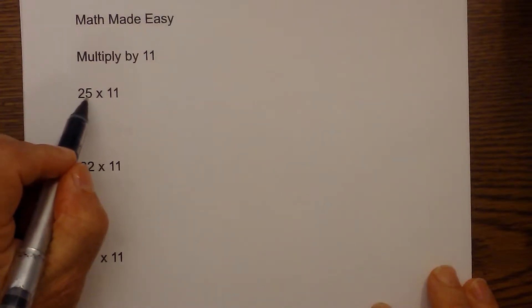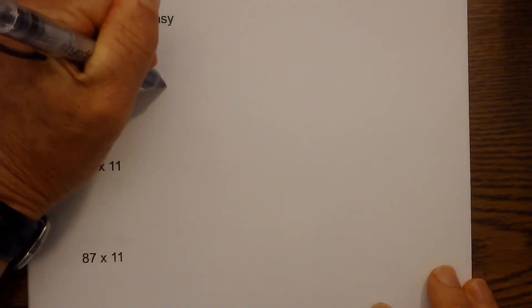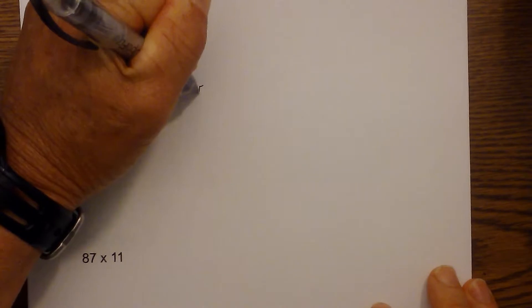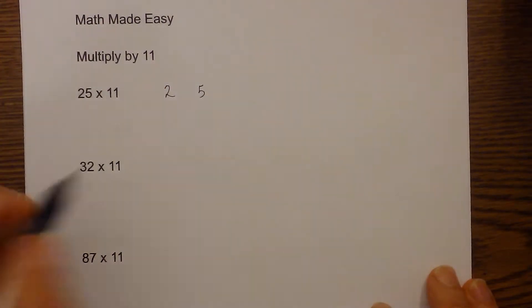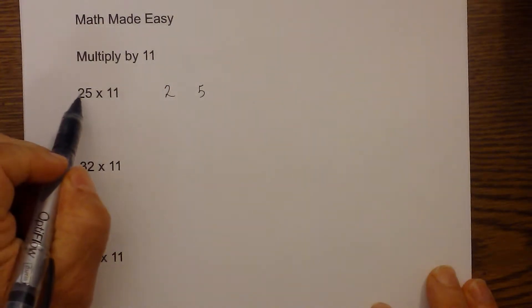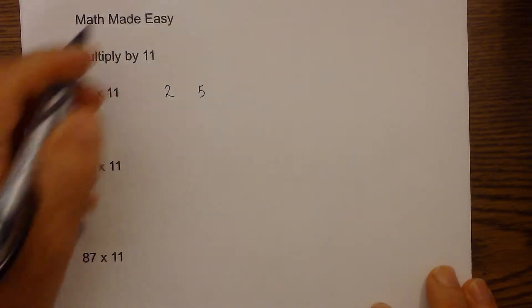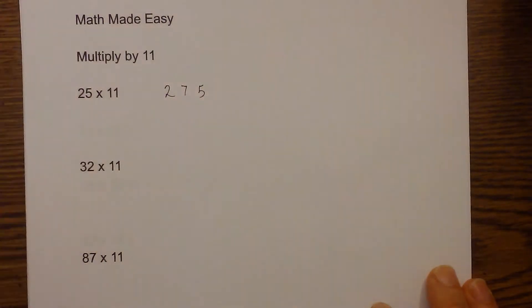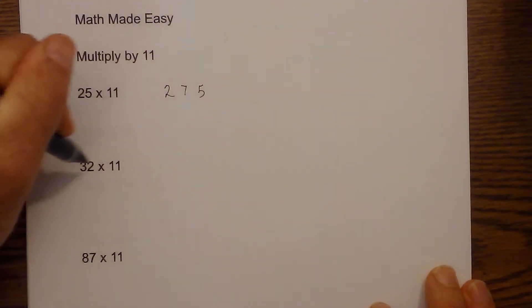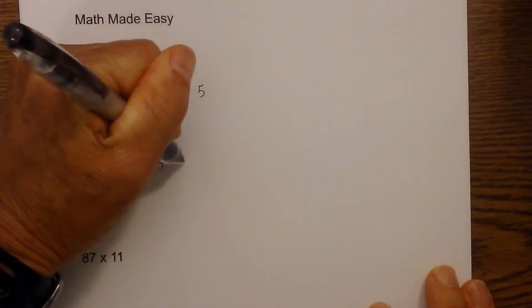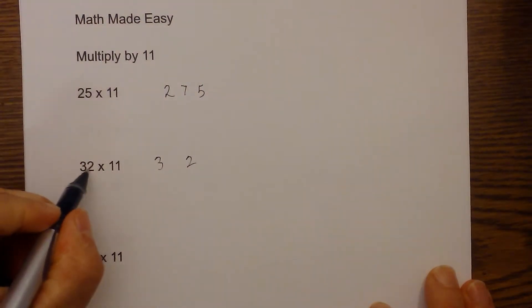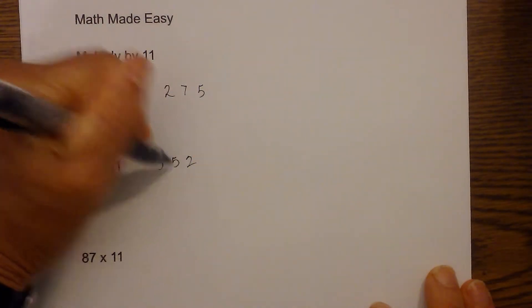So basically all you do is you have 25 times 11. You write the 2, leave a space, and then write the 5. Then for the middle number you just add 2 plus 5, which is 7. So it's 275. Let's work another example. 32 times 11: 3, write a space, 3 plus 2 is 5.